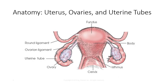The uterine cavity appears triangular when viewed in the frontal plane, and the endometrium composes the inner mucosal lining of the uterine cavity. The uterus functions to receive and retain a fertilized ovum until development of the fetus is complete, then expels the mature fetus during birth.